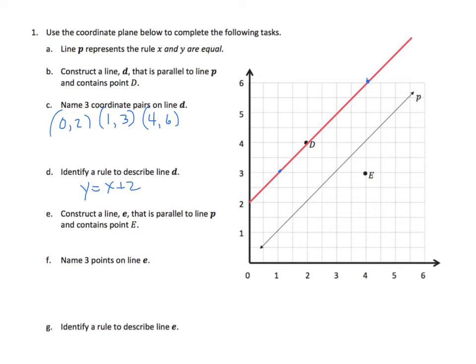Now we need to construct a second line. Line E, that is parallel to line P, and contains point E. Again, we need it to go through the corners of each one of these grid lines here, because that's what we're doing here for P, if we want to make it parallel. Now that we have our line created,